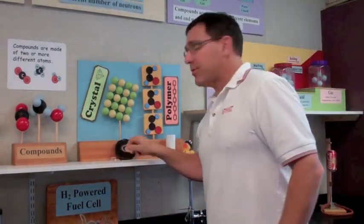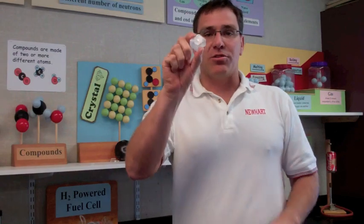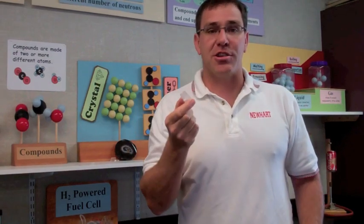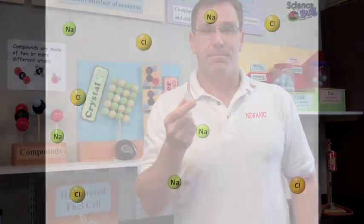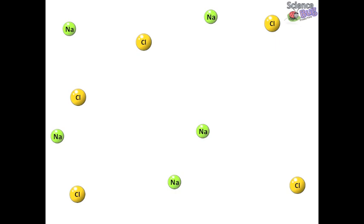Now for this production we're going to talk about salts and how they're actually formed. Salt is made from the elements sodium and chlorine. These two elements come together to form a compound called sodium chloride.